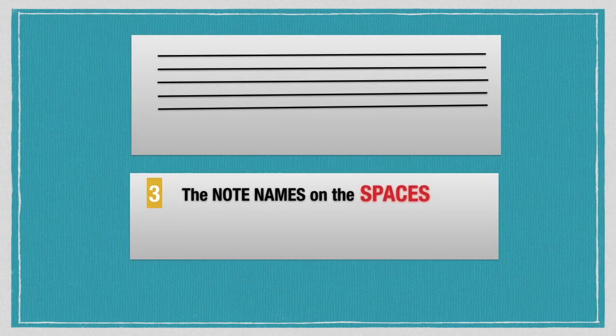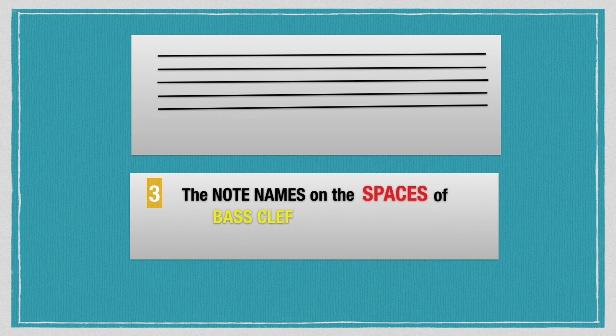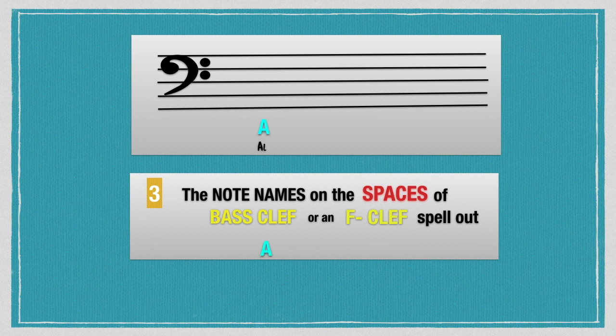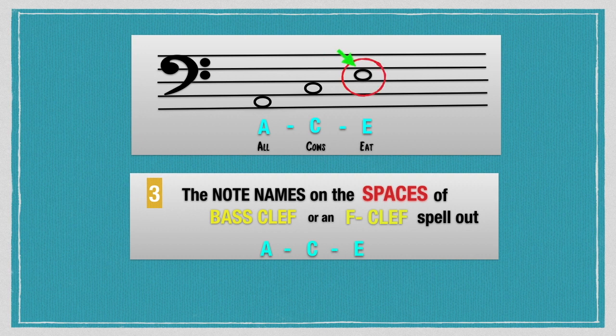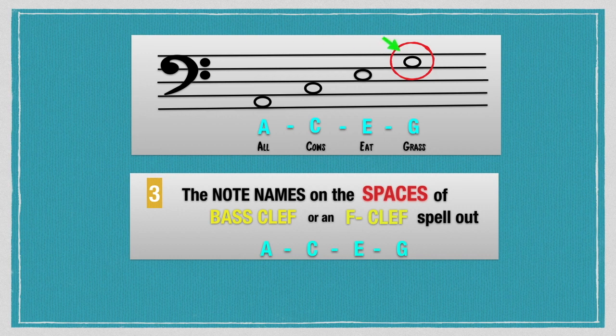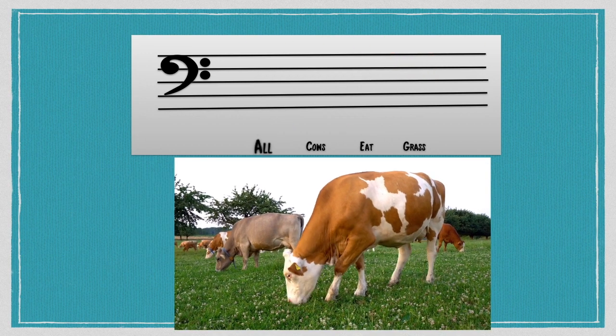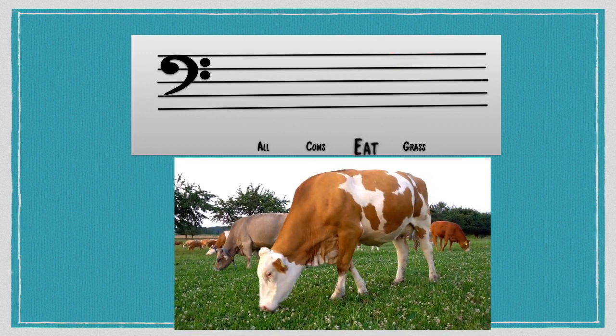The note names on the spaces of bass clef or an F clef spell out as A stands for all on the space 1, C stands for cows on the space 2, E stands for eat on the space 3, and G stands for grass on the space 4. All cows eat grass.